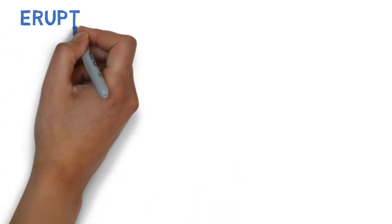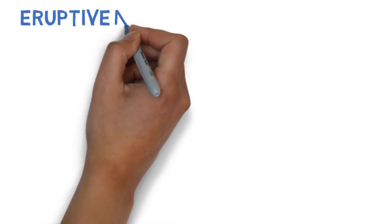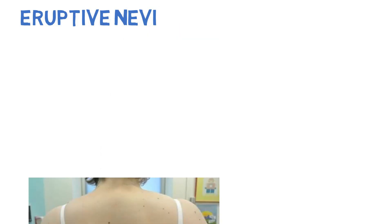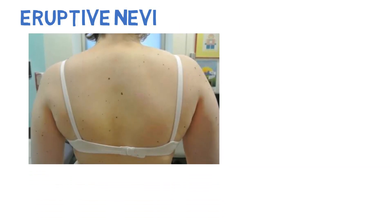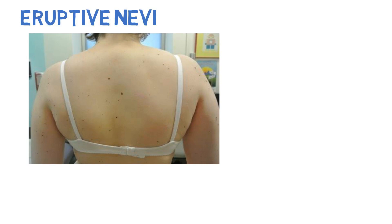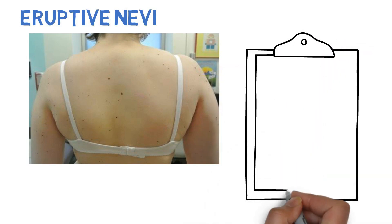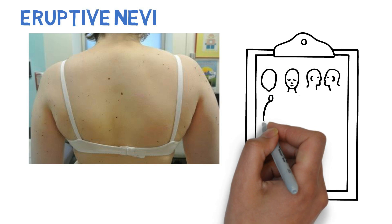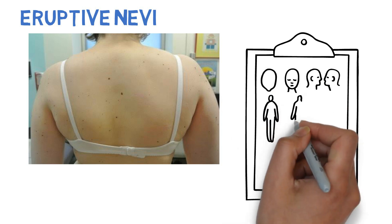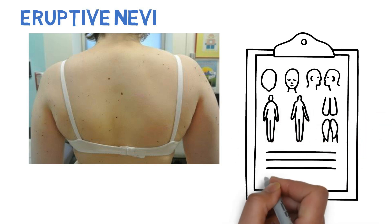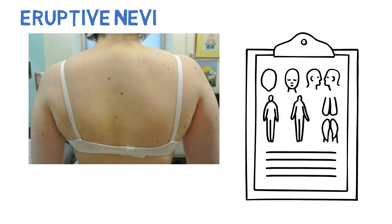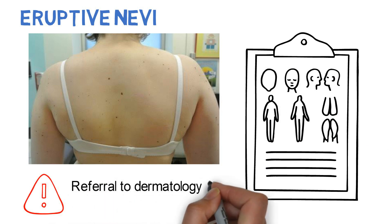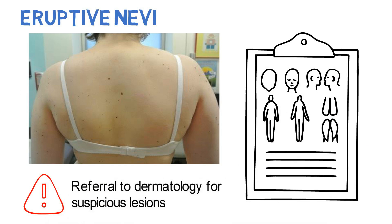Patients may also present with eruptive nevi, which is a sudden onset of pigmented lesions on the skin. Therefore, it's important that the child's healthcare provider conduct a full-body skin exam prior to starting on targeted therapy. Lesions should be monitored and any changes documented. Referral to dermatology may be needed for suspicious lesions.